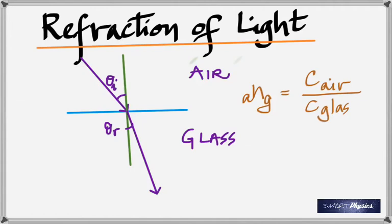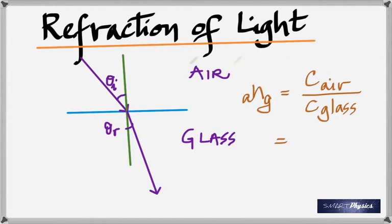Before getting to Snell's law, let's look at the refractive index — specifically the refractive index of glass with respect to air. It is defined as the speed of light in air divided by the speed of light in glass. Using the numbers given, the refractive index of glass is 1.5 — no units, it's just a ratio. The refractive index of fresh water is 1.33. The refractive index of diamonds is the highest.